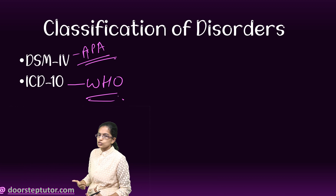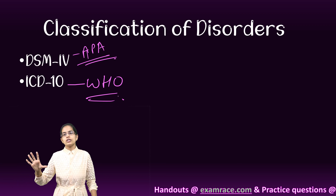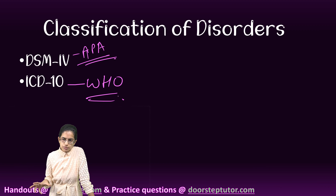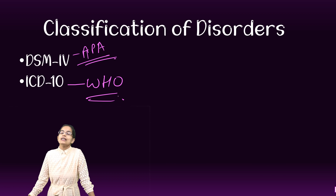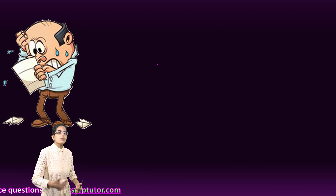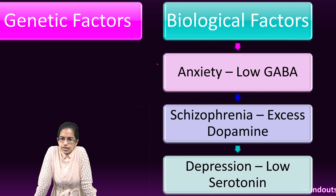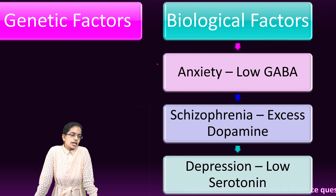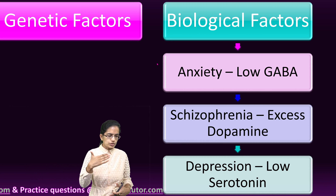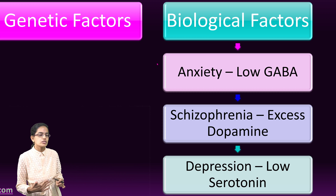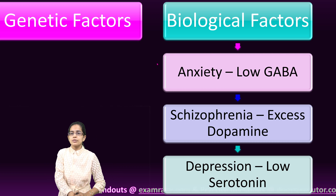Understanding and classifying disorders became possible only after the reform movement, as scholars previously focused on supernatural and superstitious explanations. Regarding factors underlying abnormal behavior, genetic factors include mental retardation, mood disorders, and schizophrenia, which are carried from generation to generation. There is no single gene responsible for psychological disorders, but strong evidence supports that genetic displacements are seen across generations.